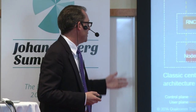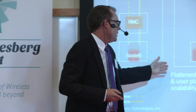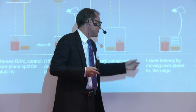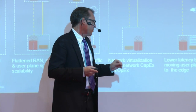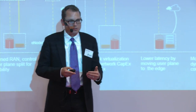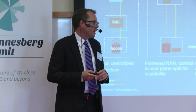Looking at network architecture, as we evolved from HSPA to LTE and LTE+, we moved from a classic centralized architecture with control plane and user plane to a flattened RAN architecture where control and user planes were split, implementing techniques such as SIPTO to offload user traffic to the edge. In 5G, we want to holistically leverage NFV — network function virtualization — from the onset to lower CAPEX and OPEX. We'll continue exploring moving the user plane to the edge and also take a mobility-on-demand approach where the C-plane and U-plane are both optimized for the particular scenario.